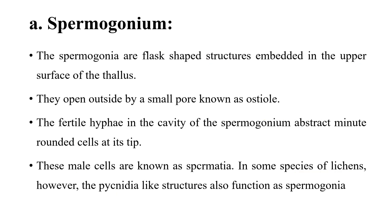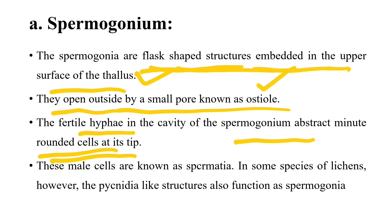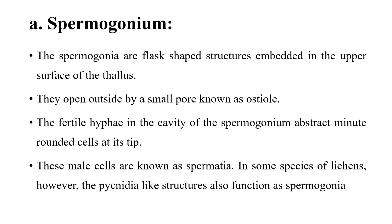The spermatogonium is a flask-shaped structure embedded in the upper surface of the thallus, opening outside by a small pore called the ostiole. The fertile hyphae in the cavity of the spermogonium produce minor rounded cells at the tip — these male cells are called spermatia. In some species, pycnidia-like structures also function as spermogonia.